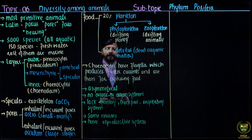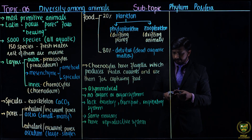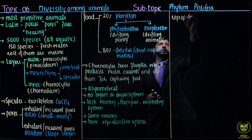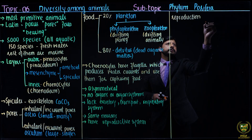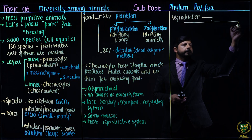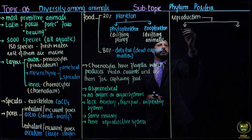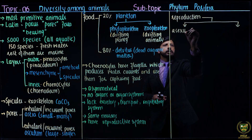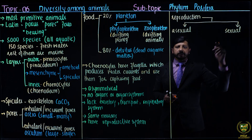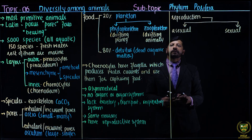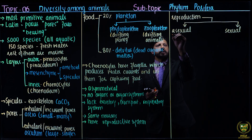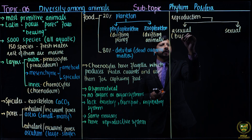Reproduction is of two types: asexual as well as sexual reproduction. Both are observed. In the case of asexual reproduction, the process is called budding, which will eventually be converted into an adult.